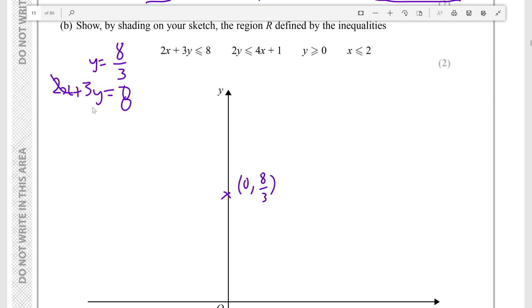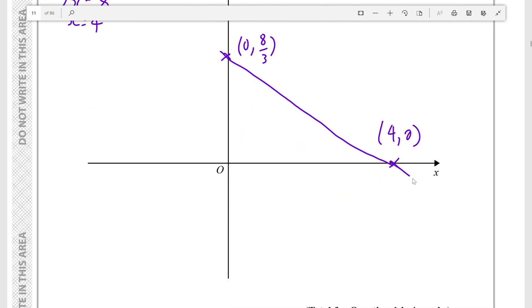And then when y is equal to 0, we can find where it crosses the x-axis. Setting y to 0 in 2x plus 3y equals 8 gives 2x equals 8, so x equals 4. So we get the point at (4, 0), and then there is a line in between. Now I'll just extend this line a bit in both directions, it is easier to see.